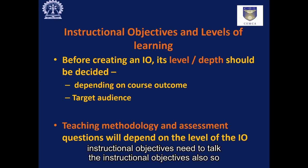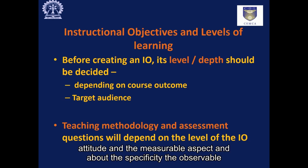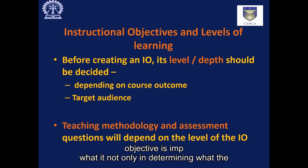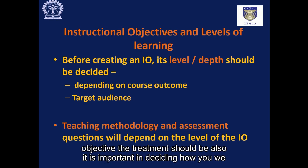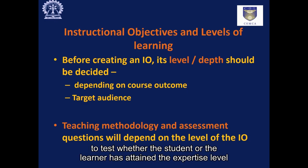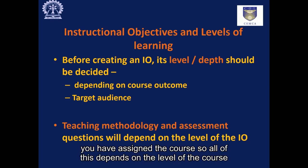Instructional objectives need to talk about the specificity, the observable attitude, the measurable aspect, and also the level and the depth of the objective. The depth or level of the objective is important not only in determining what the treatment should be, but also in deciding how you are going to teach the course and what kind of questions you would be creating to test whether the learner has attained the expertise level you have assigned the course. All of this depends on the level of the course, so we need to see what these levels are.